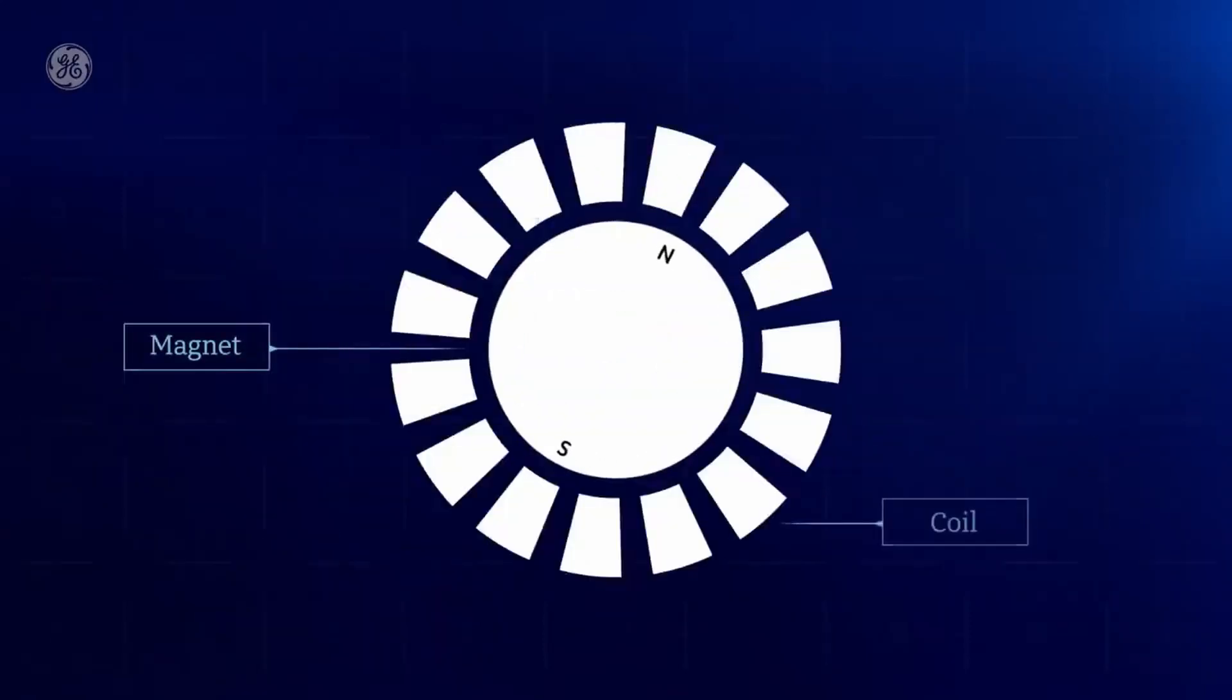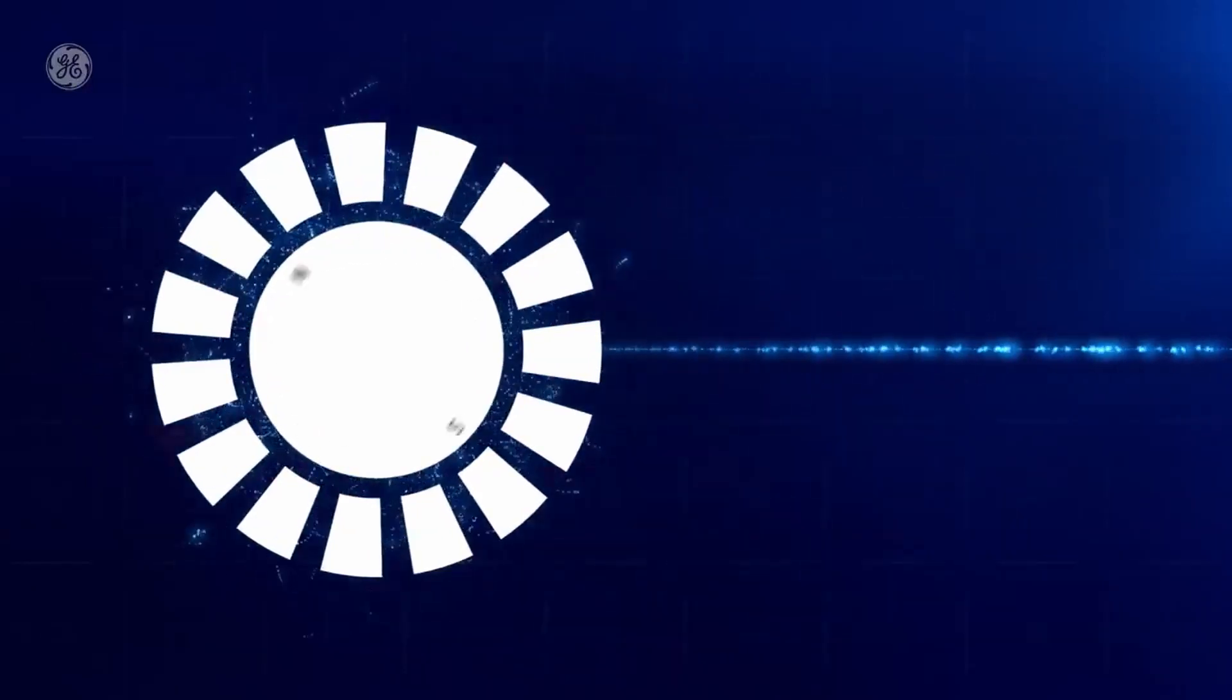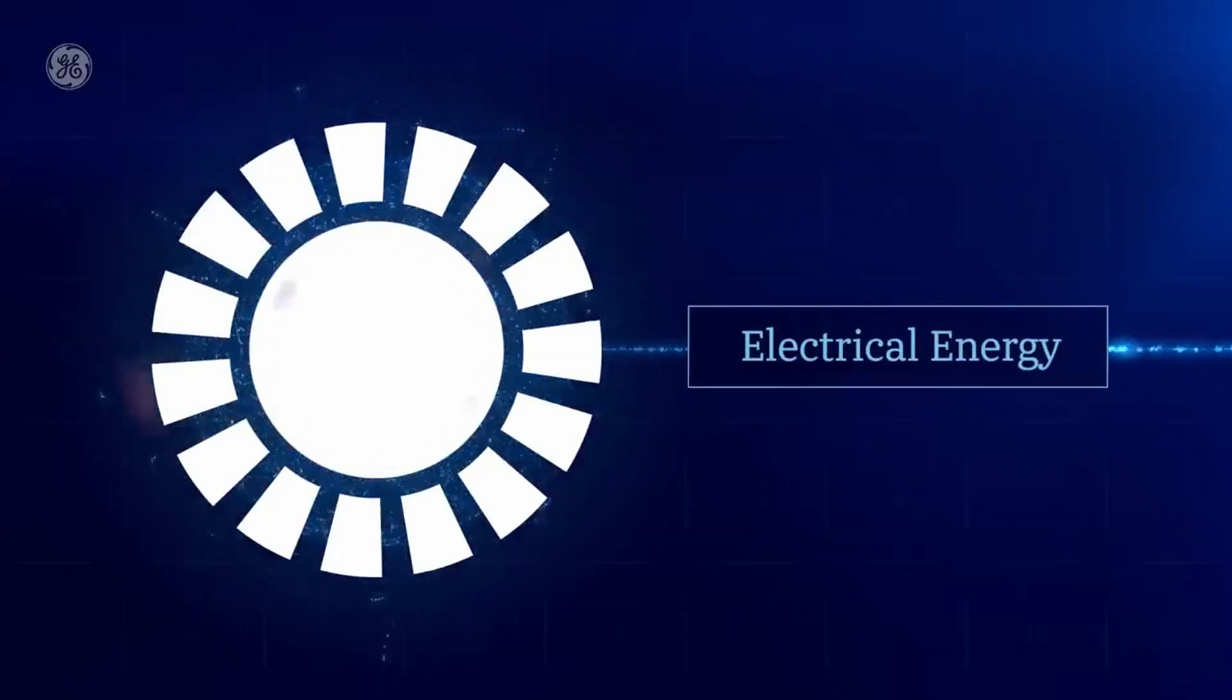That generator has a large magnet surrounded by coils of copper wire. When that magnet gets rotating fast, it creates a powerful magnetic field that lines up electrons around the coils and causes them to move. The rotating mechanical energy has now been converted into electrical energy because the movement of electrons through a wire is electricity.